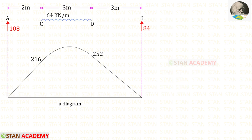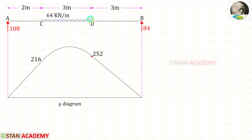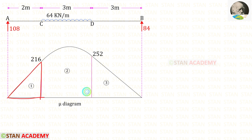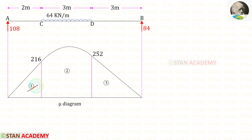Now for the simply supported beam, let us draw the bending moment diagram. To find the ordinate under point C, we multiply RA by distance 2: 108 into 2 gives 216. To find the ordinate under point D, we multiply RB by distance 3: 84 into 3 gives 252. This bending moment diagram is called the Mu diagram. In this diagram there are 3 parts: 2 triangles and a parabola. We label the first triangle as 1, the parabolic portion as 2, and the second triangle as 3.